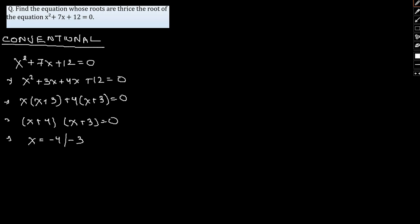Now it is given roots are thrice the roots, so new roots will be x = -12 and -9, thrice the roots. Therefore the factors would be (x + 12) and (x + 9).